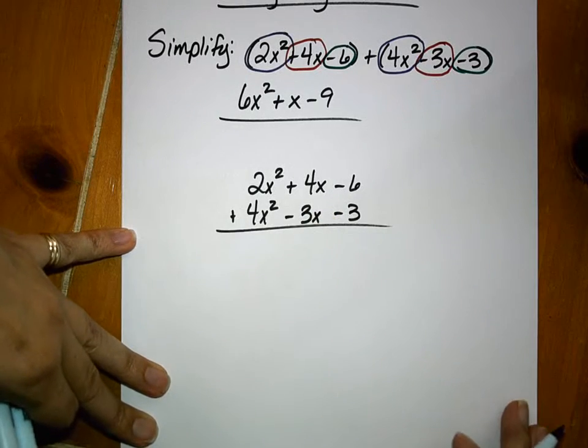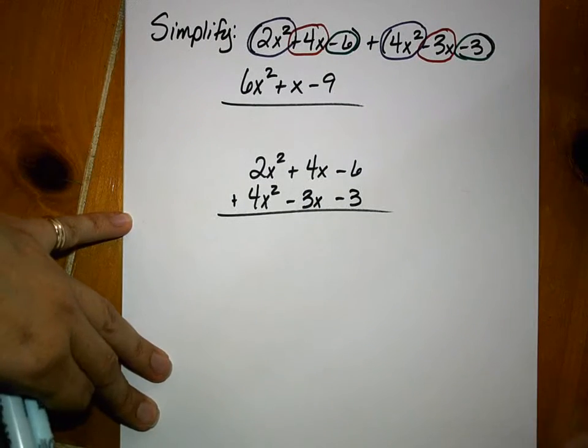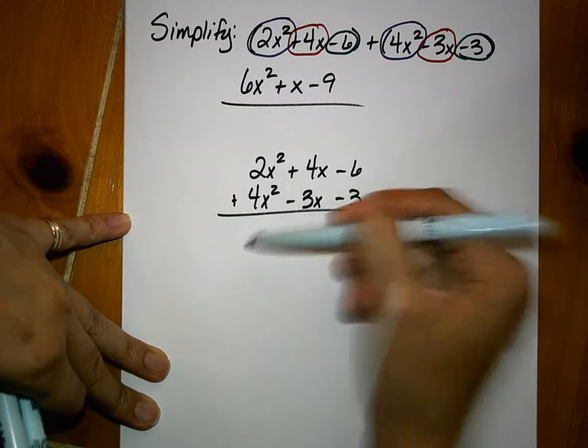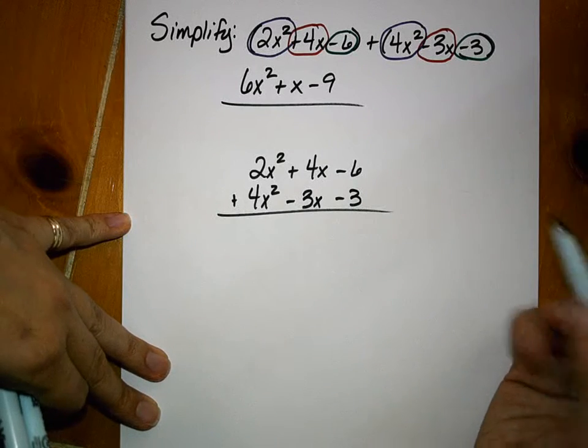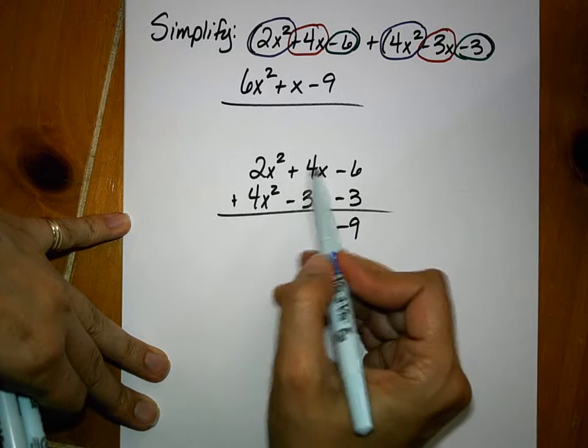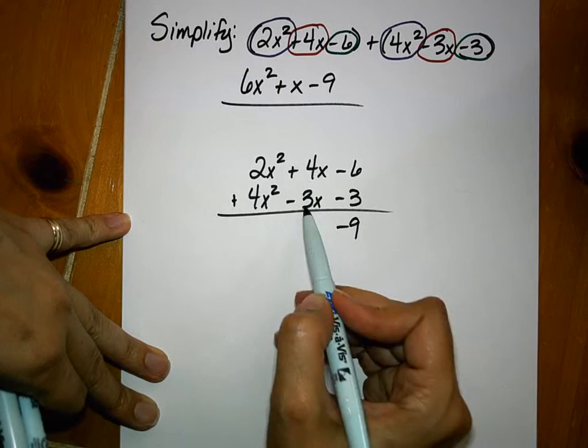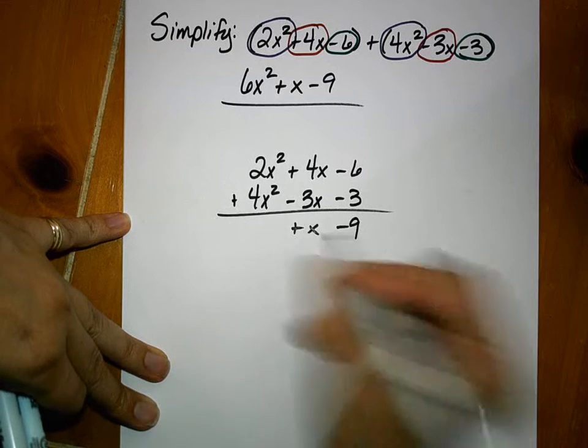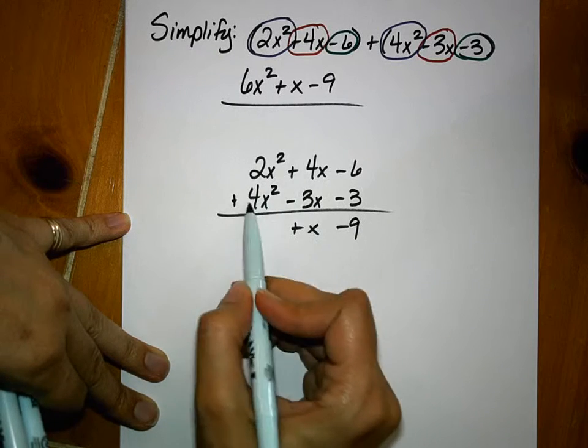And we add them together as if we were doing an old school addition problem. And then we just add straight down, taking into account our symbols. So we have a negative 6 plus a negative 3, negative 9. We have a positive 4x plus a negative 3x. And we have a 2x squared plus 4x squared.